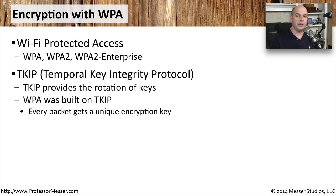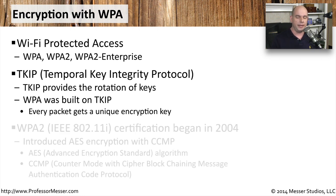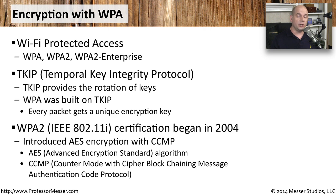We're going to focus on two types of technologies used in WPA. The first is TKIP, which stands for Temporal Key Integrity Protocol. TKIP was built to rotate keys so there would not be the same problems we ran into with WEP. TKIP also ensured that there would be something unique about each one of these encryption keys. The other technology commonly seen with WPA2 today is AES, used in conjunction with CCMP.